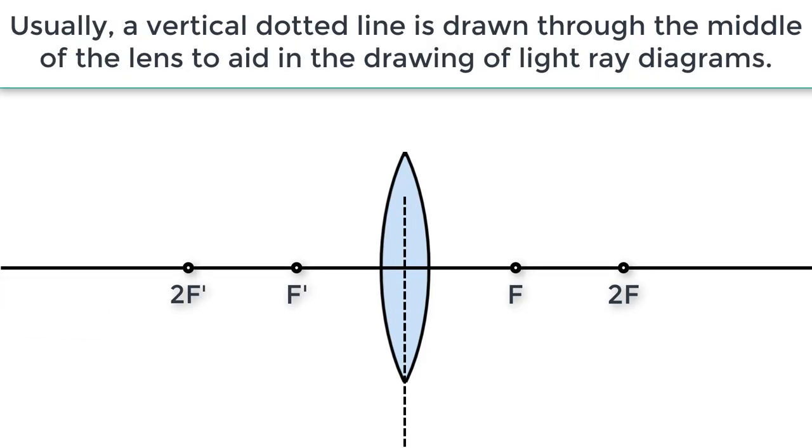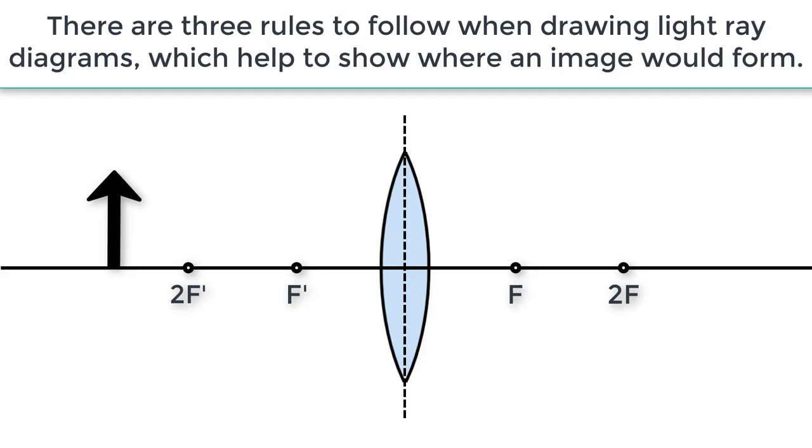Usually, a dotted line is drawn through the middle of the lens to aid in the drawing of light ray diagrams. There are three rules to follow when drawing light ray diagrams, which help to show where an image would form.